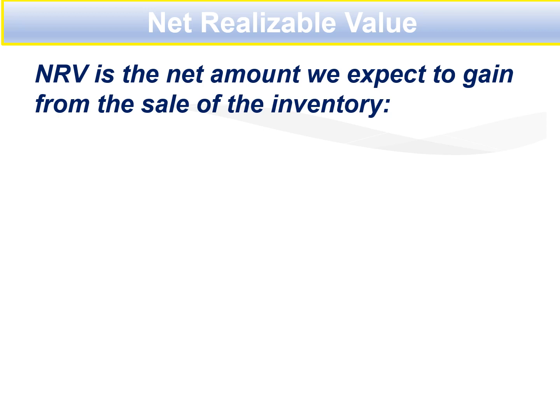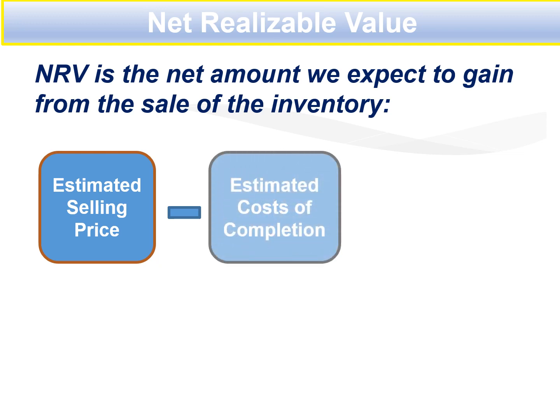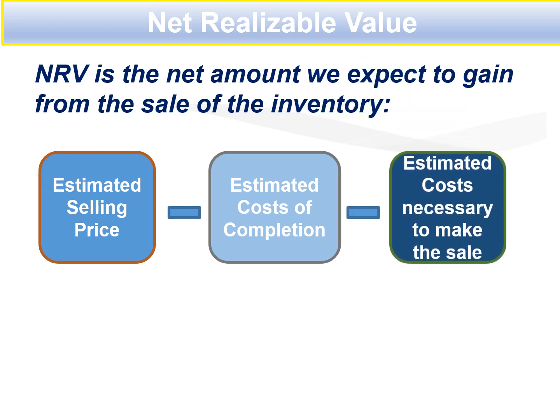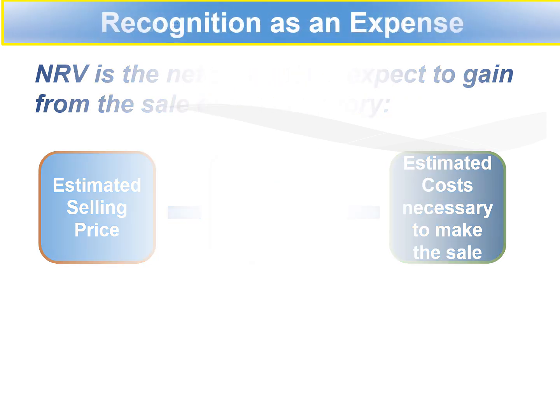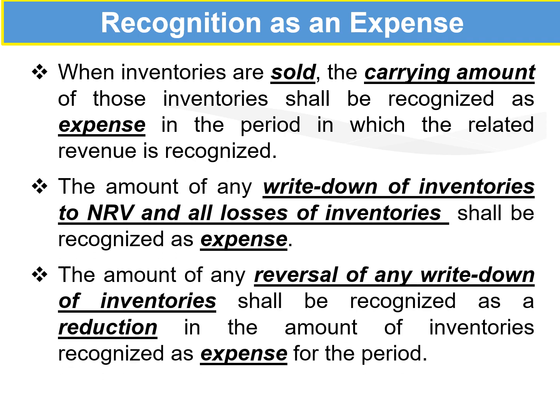Net realizable value is what we expect to gain on the sale of inventory. The computation is: estimated selling price less the estimated cost of completion — the cost necessary to make it ready for sale, such as for repossessions. When inventories are sold, the carrying amount shall be recognized as expense in the period in which the related revenue is recognized, in accordance with the accrual method. When we sell items, we also recognize the cost of sale for that product.